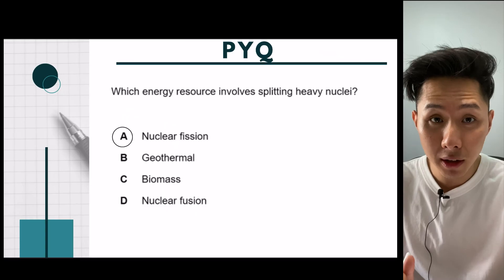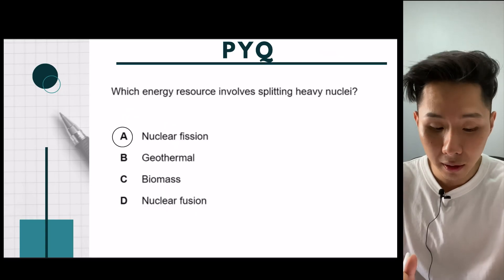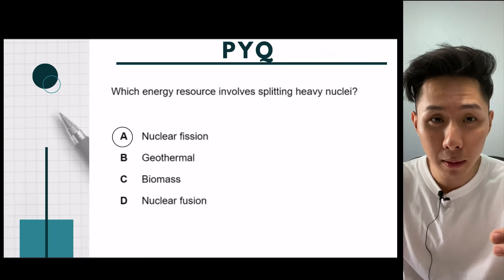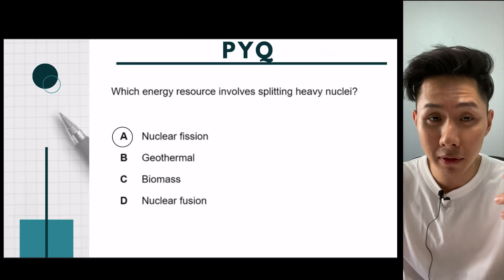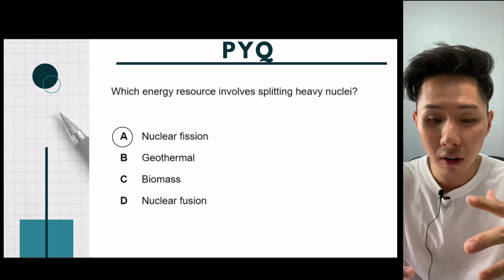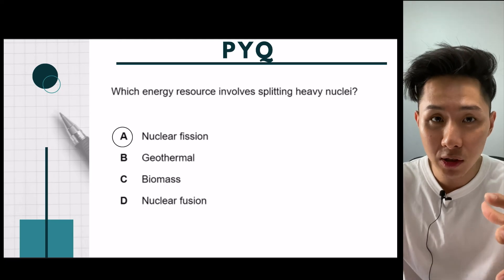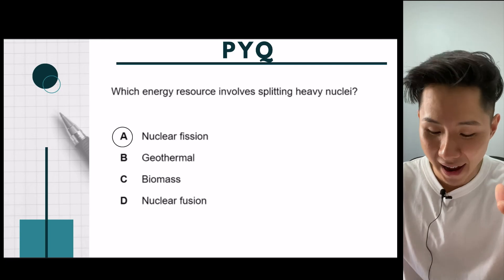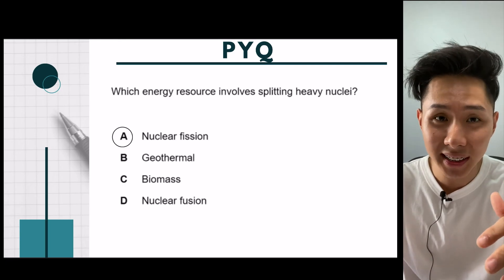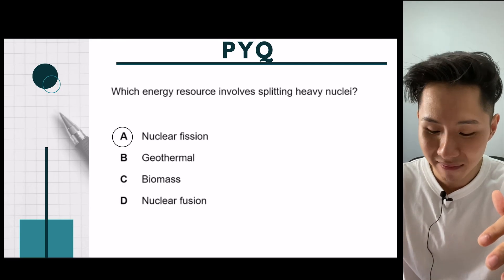That's about it for this chapter. We learned about where energy comes from, the different forms of energy — renewable and non-renewable — and how most of the energy we use today actually comes from the sun. I'll see you in the next video.